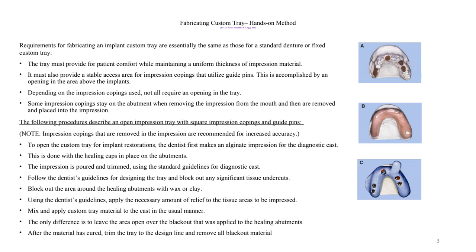Closed tray impression is used for implant cases where accuracy is needed but it is a single unit where everything is pretty much close to the ideal location of the implant. That's when it's good to use a closed tray impression.